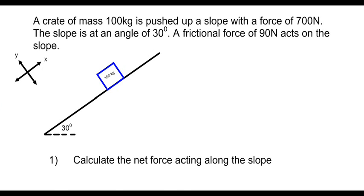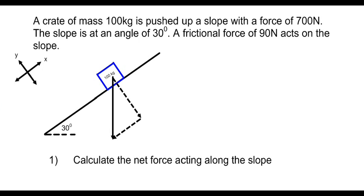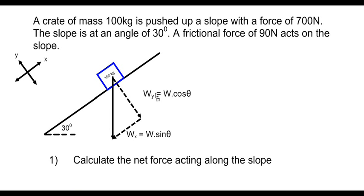Looking at the forces acting on the slope, the most obvious force is the gravitational force, which can be broken up into two components: the x-component of weight, wx, and the y-component of weight, wy. The x-component is wx = w·sinθ, and the y-component is wy = w·cosθ.